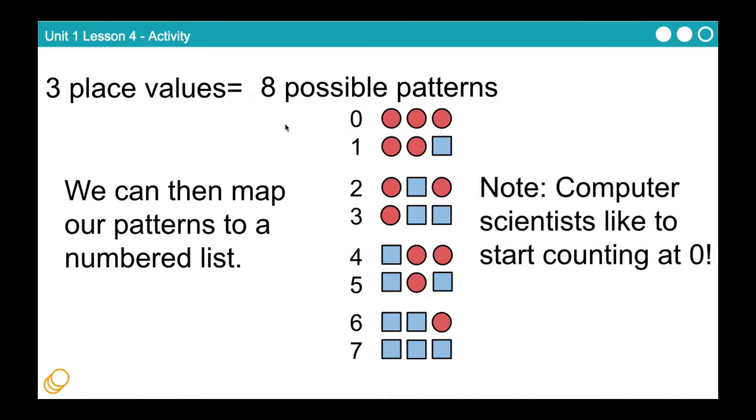We can then map these to fit a number. We can make these represent actual physical numbers in the world as we know it. So we can use three circles to represent the number zero, circle circle square to represent the number one.